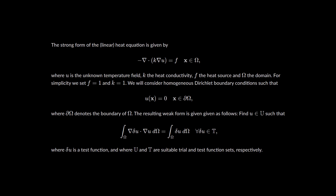Since the heat equation is the hello-world equation of finite elements — because it's much simpler than other partial differential equations — here I'm going to show you how to solve this equation on a unit square with a uniform internal source, where u is the unknown temperature field, k is the heat conductivity, f is the heat source, and omega is the domain. We consider homogeneous Dirichlet boundary conditions such that u(x) = 0 on the boundary of the domain, which is partial omega.